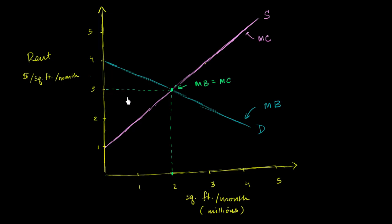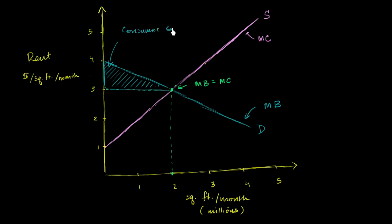You can look at the total surplus here. In this equilibrium scenario, we can calculate the consumer surplus. For this first incremental square foot, someone who's willing to pay $4 per square foot only has to pay $3; the next one has a little less than $4 in benefit but also only pays $3, all the way to the equilibrium point. So the area of this triangle is the consumer surplus. This triangle has a height of $1 and a base of 2 million, so the area is 1 times 2 times one-half, equal to $1 million of consumer surplus per month.